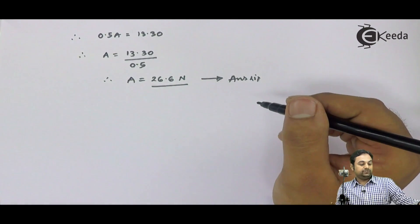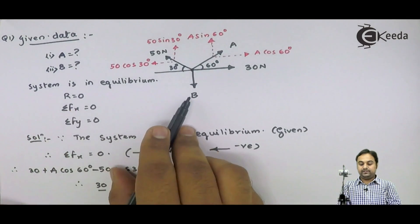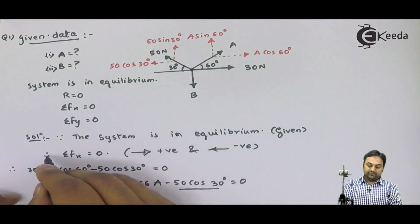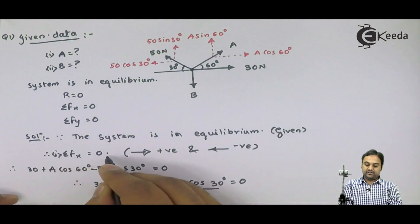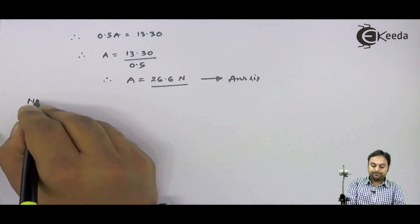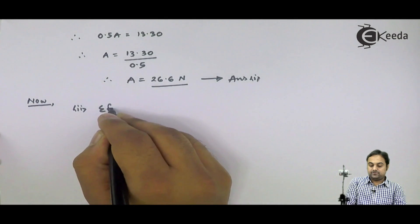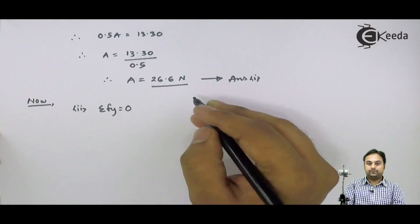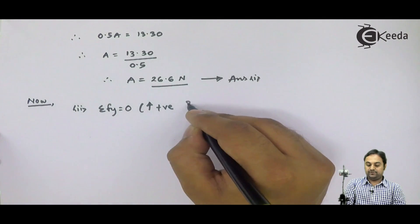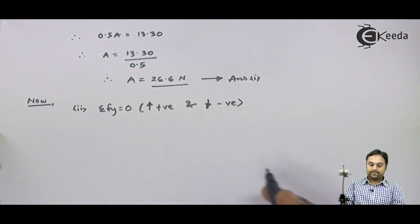Now, if I look into the second question, they are telling us to find the value of B, this vertical force. So I will be using the second condition of equilibrium. The first condition was summation Fx is equal to 0. Now I will say that summation of Fy is equal to 0, where all upward forces are to be taken positive, all downward forces are to be taken negative.